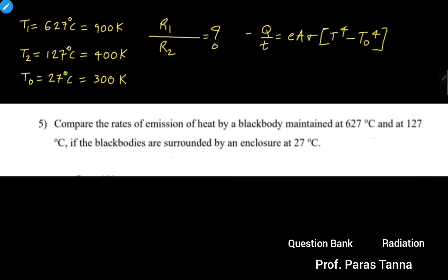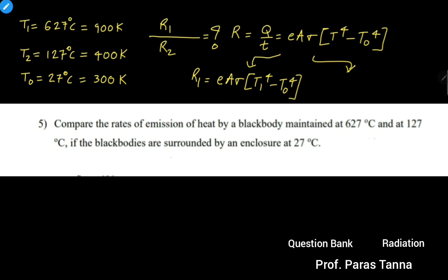This ratio Q/t is denoted by capital R. So we have to find out R1, which equals EAσ(T1⁴ − T0⁴). And for the second case, we find R2, which equals EAσ(T2⁴ − T0⁴).